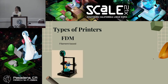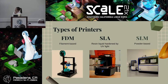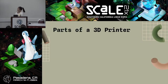We have three main different types of printers. The first one is called FDM, which is a filament-based printer that most people use when they 3D print — it's also the one I'm going to be focusing on throughout my presentation. The second is SLA, which uses resin hardened through UV light. The last one is SLM, which is powder-based.